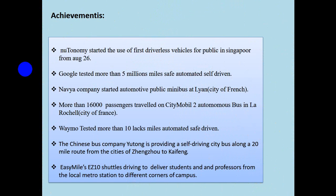In the world, lots of projects and companies are interested in this technology. Nuro started the use of the first driverless vehicle for public transportation in Singapore. From August 26, 2016, Google tested more than 5 million safe automated self-driving miles. The EasyMile company started an autonomous public minibus in Lyon, City of France. More than 60,000 passengers traveled in CityMobile2 autonomous bus in La Rochelle, France. Yandex tested more than 1 million miles of automated self-driving. The Chinese bus company Yutong is providing a self-driving city bus along a 20-mile route.